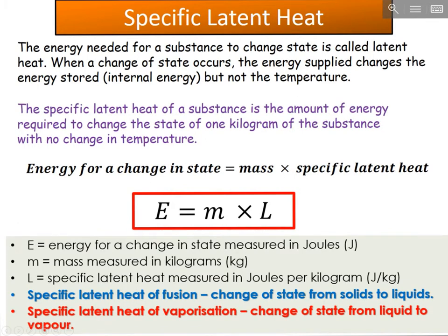There are two types of specific latent heat: the specific latent heat of fusion (solid to liquid) and the specific latent heat of vaporization (liquid to vapour). The equation is E = mL, where E is energy in joules, m is mass in kilograms, and L is specific latent heat in joules per kilogram. This equation is given on the equation sheet.